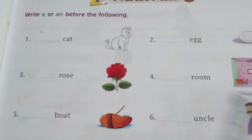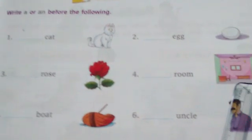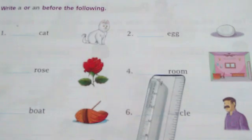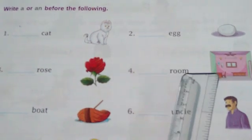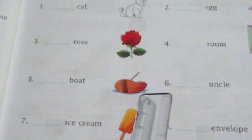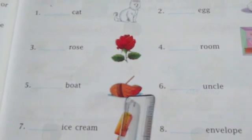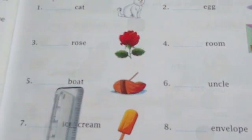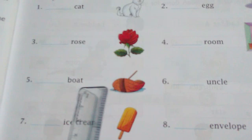What is this? This is a picture of a room. So we have to put here what? A room. What is this picture? Yes, this is a boat. So we have to put here what? A boat.